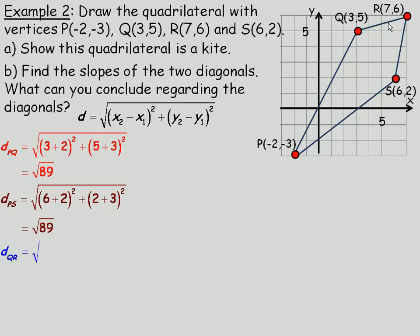So QR, we will go 7, take away 3, squared. Plus 6, take away 5, squared. So that is 4. And 4 squared is 16. And this is 1. 1 squared is 1. So we are adding 16 and 1. So the length of QR is just the square root of 17.